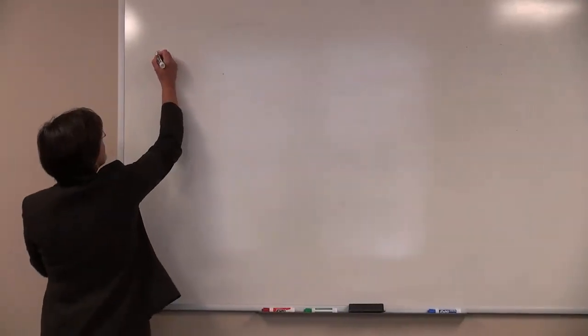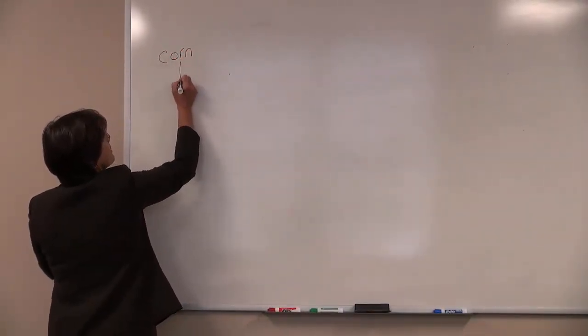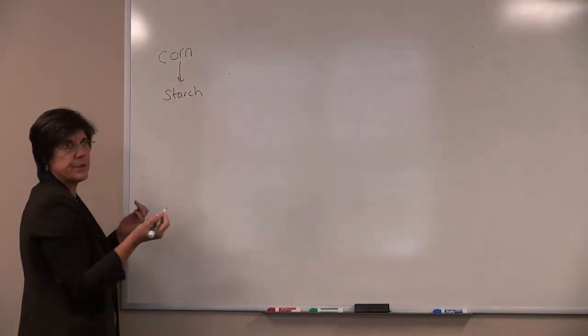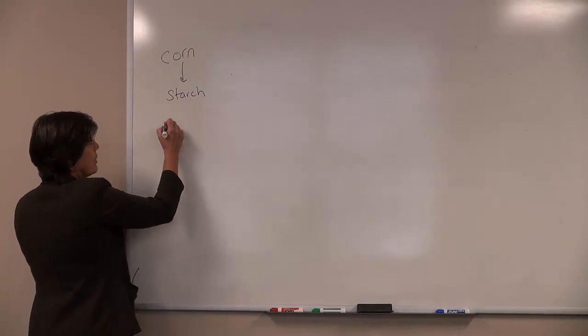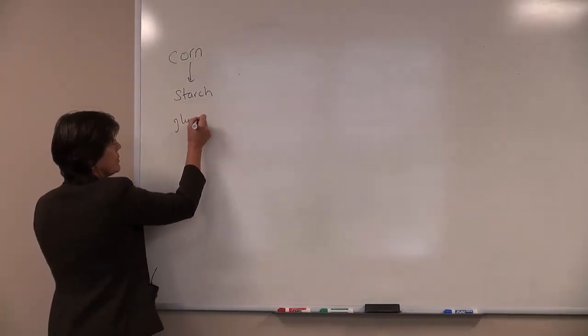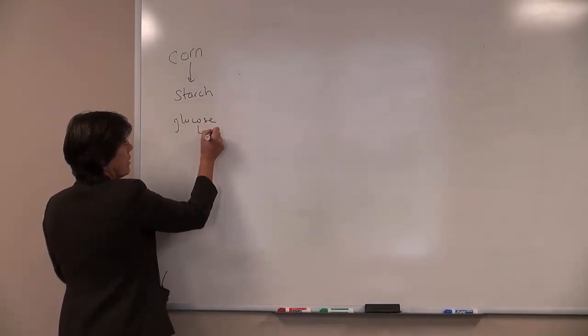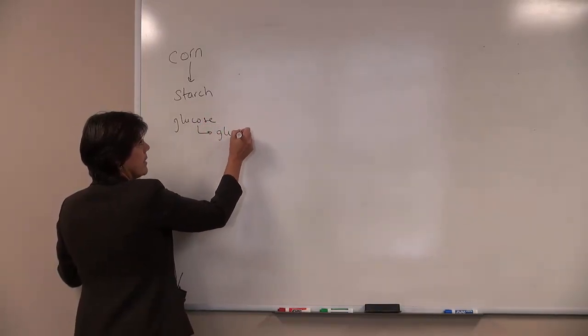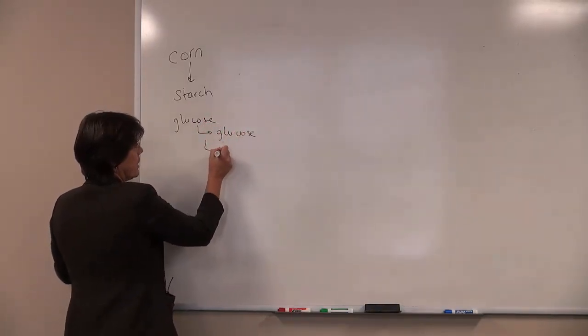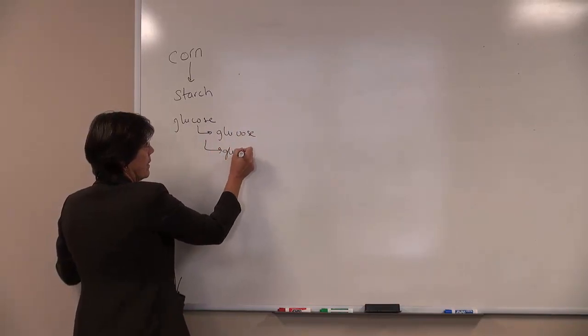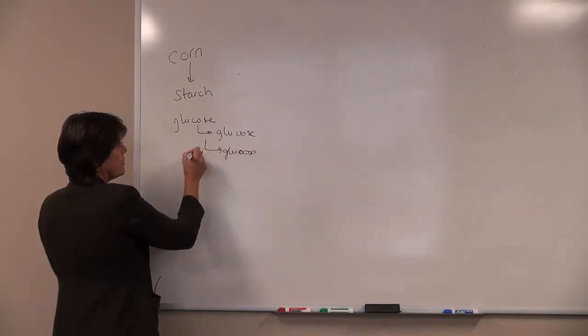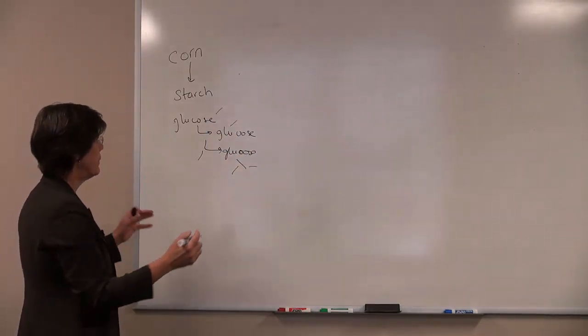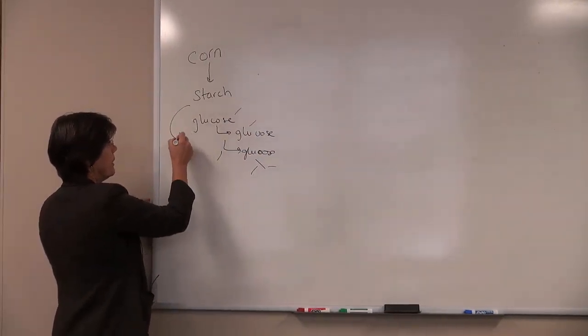We know that corn has primarily a lot of carbohydrate which is in the form of starch. Starch is made up of glucose, a carbohydrate linked together by bonds in a series of chains. These links of glucose branch off and form a very large molecule. So this is what starch is made up of chemically.